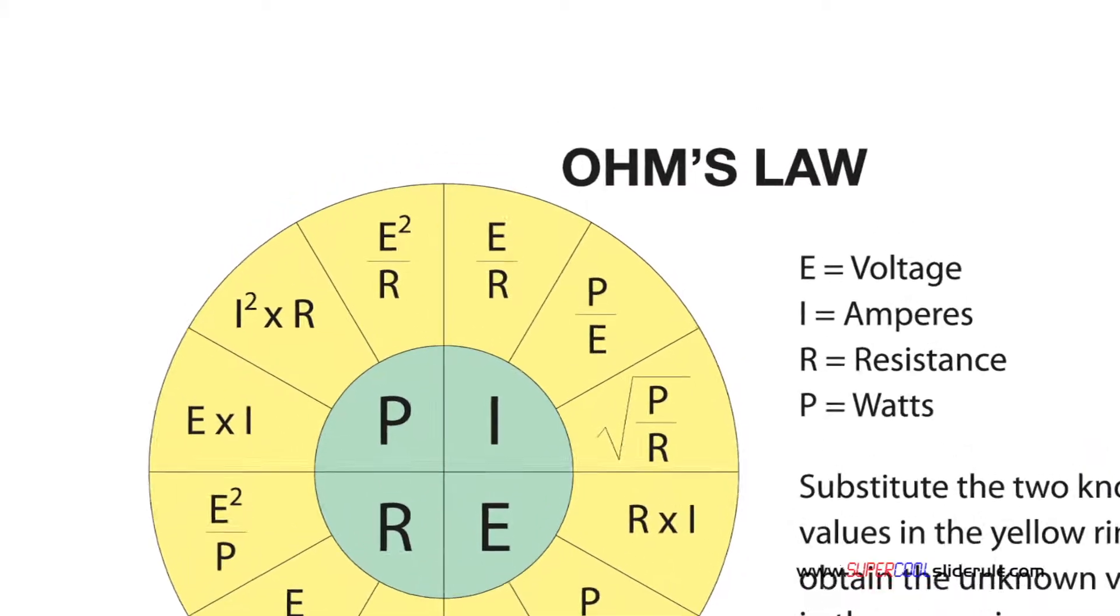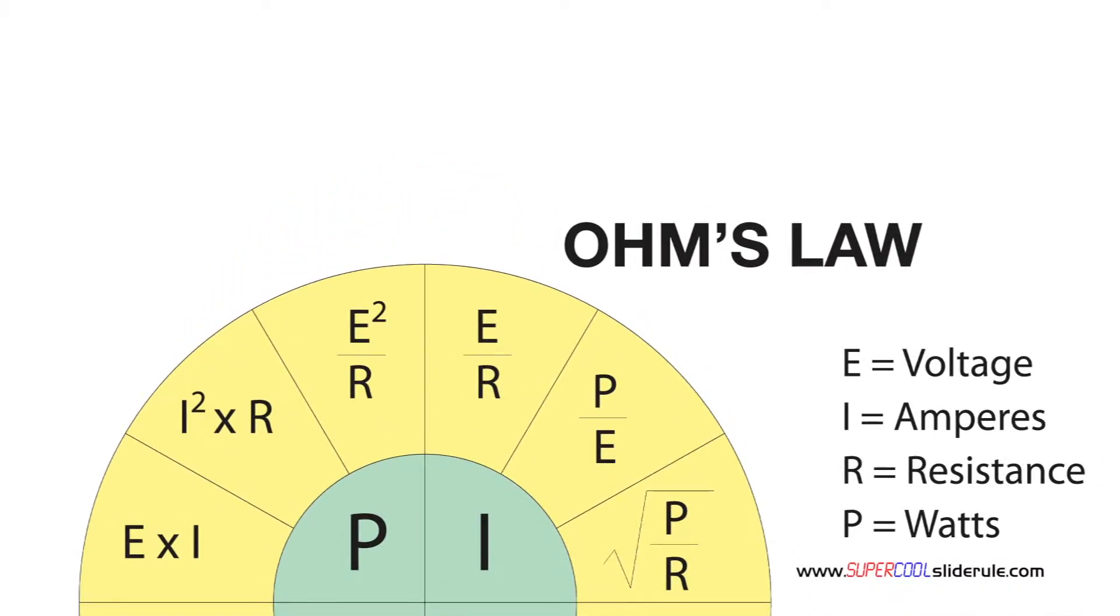If you have a super cool slide rule, get it out and turn it to the back. We will be using this equation here. For this example I will use 12 amps and 20 ohms resistance. Let's substitute these values into our equation.